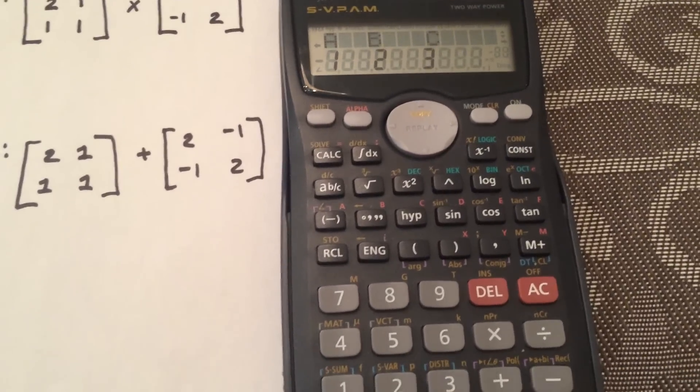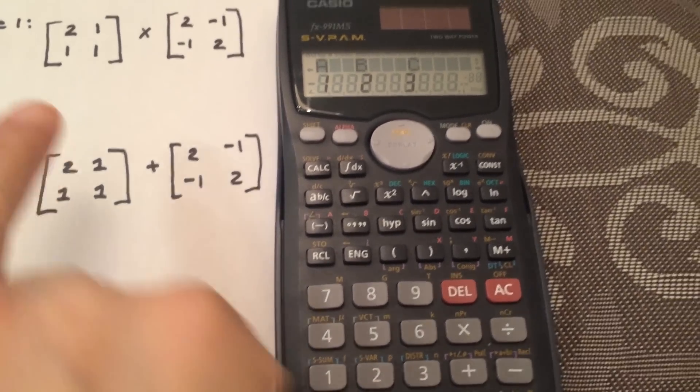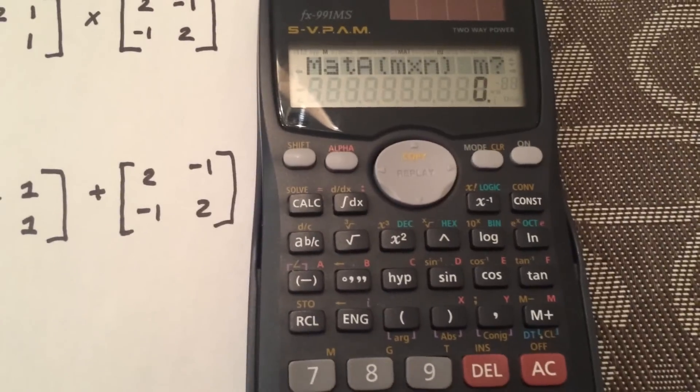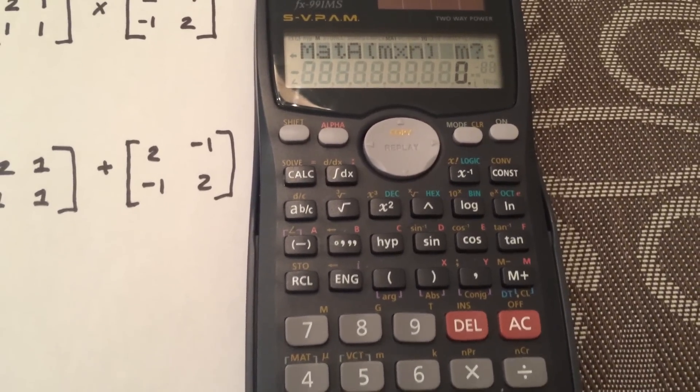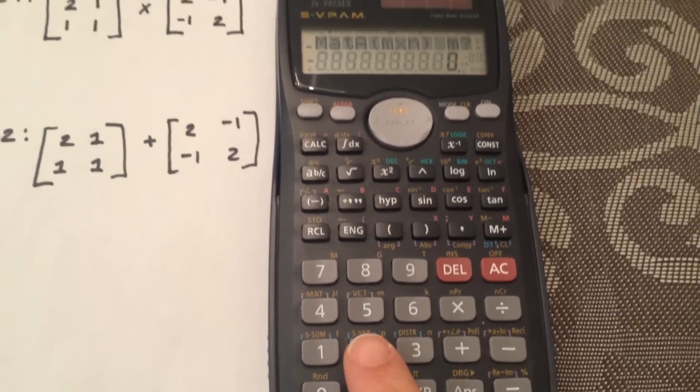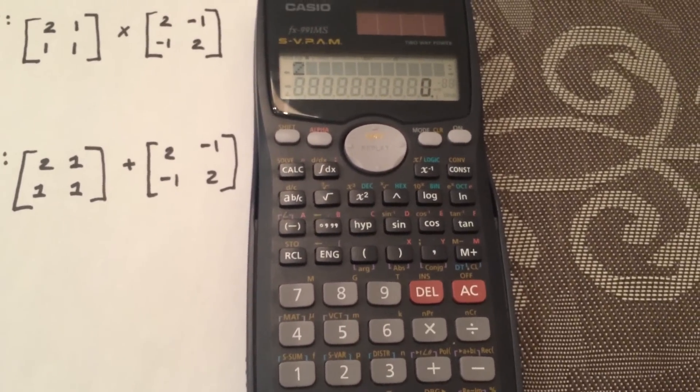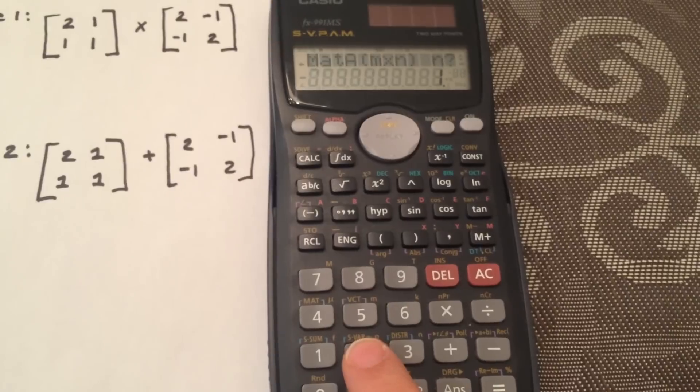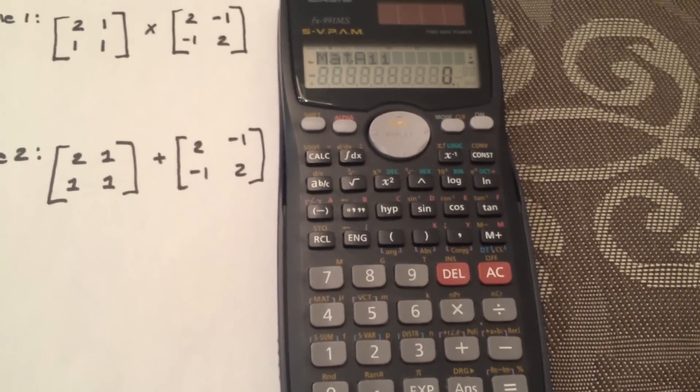So we're going to start with the first matrix. So we're going to call this first one matrix A. So it says M times N, so it wants to know what is the dimension. I'm going to hit 2 because there's 2 rows, equals, and then 2 columns. So it's 2 by 2.